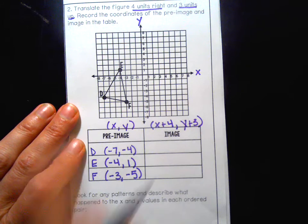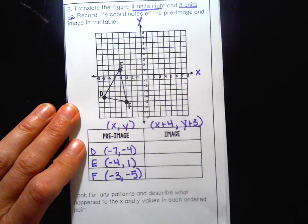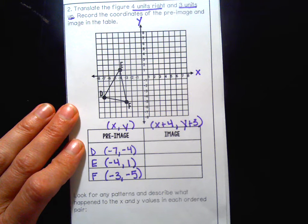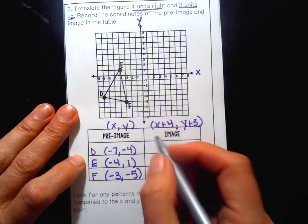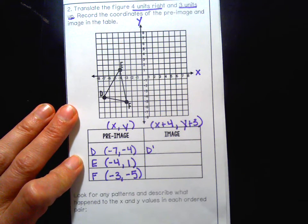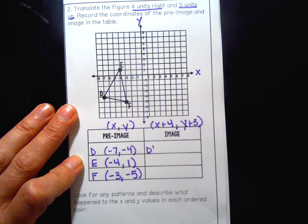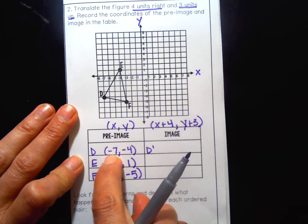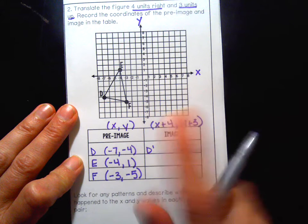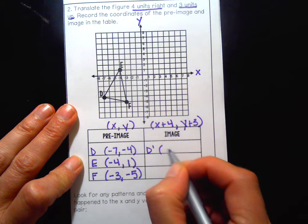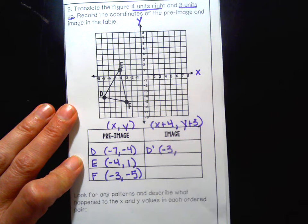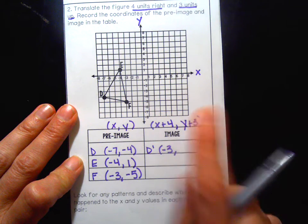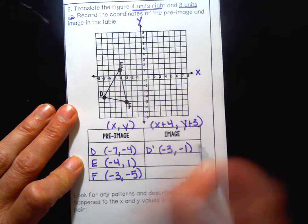That's the rule that's going to move my pre-image to the image. I'm going to do the math first and then plot the points on the graph. So I'm going to make D prime. Remember it's the image and so it's got to have a prime so we know it's the copy. I'm going to take my x. I start with negative seven, I have to add four. Negative seven plus four is negative three. If you need to use a calculator for the math part, that's fine. Negative four plus three, I have to add three to my y, is negative one.